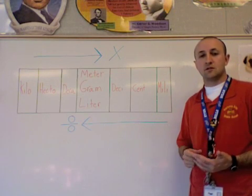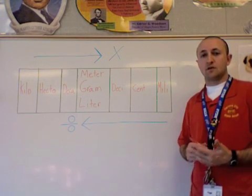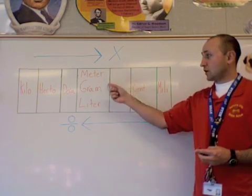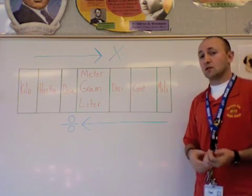Today we're going to look at the metric system. The metric system is a unit or method of measurement in which we have three different units based on what we want to measure.